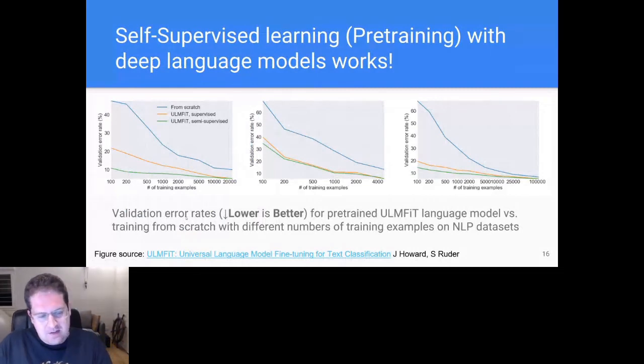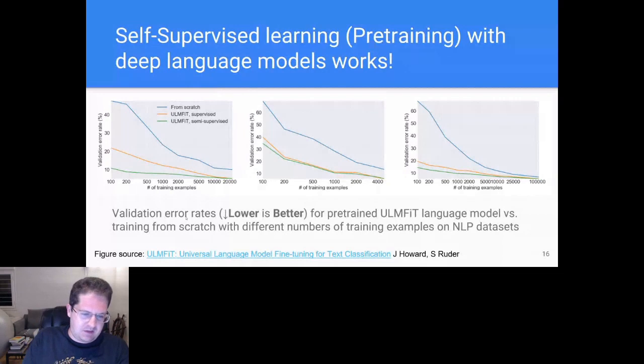For example, here we see a huge difference. This is some examples from NLP, but we see there's a huge amount of difference in the performance if you only have, say, 100 samples. If you have 200,000 samples, there's still a notable difference.